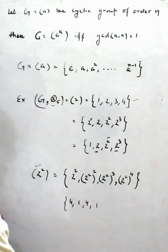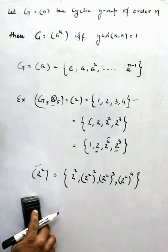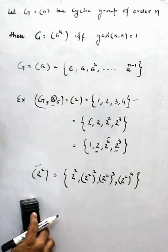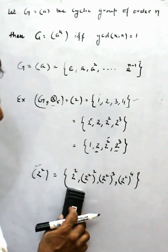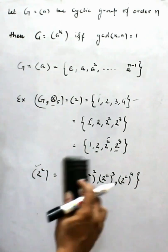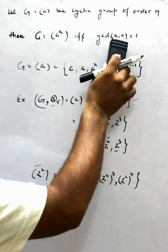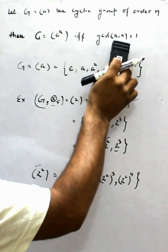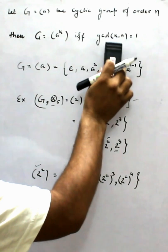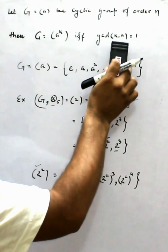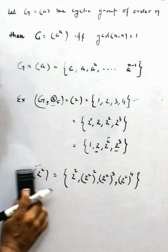Since 2^2 does not generate all 4 elements, it is not a generator of G. There are only 2 generators: 2 itself and 2^3. We can only take elements whose power is co-prime to the order of the group.